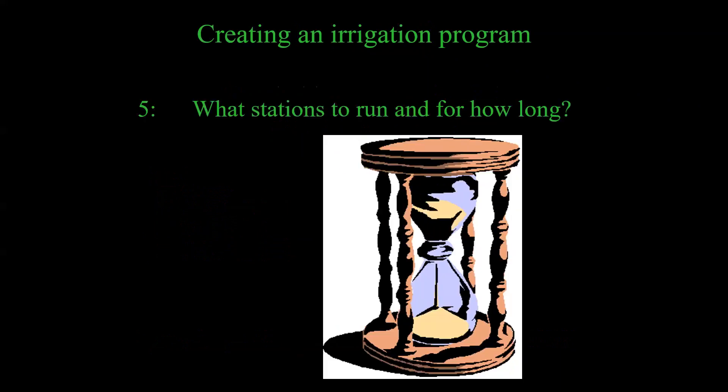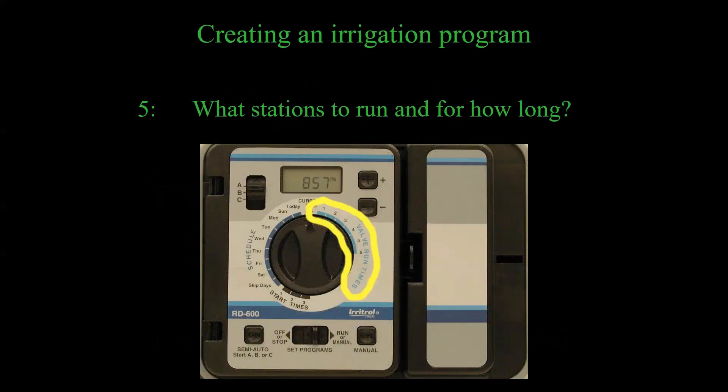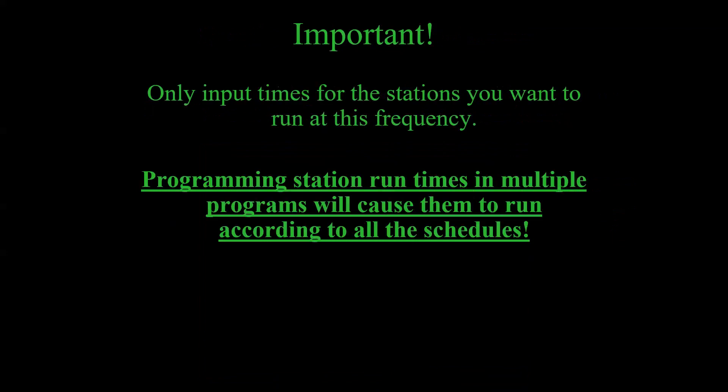The last thing the controller needs to know is which stations to run and for how long. On this controller you have individual zones listed; on a Hunter it'll say 'station run times' and you cycle between them with arrow buttons, then use plus and minus to adjust. Importantly, only put run times for the stations you want to run in that program. A common programming error is entering information for a station in all 3 programs. With an ABC selector switch, the controller is running all 3 programs all year round — so we're going to show you how to use those programs correctly.